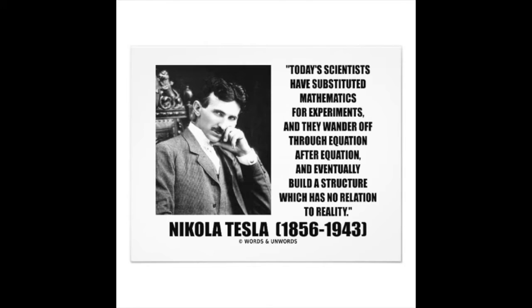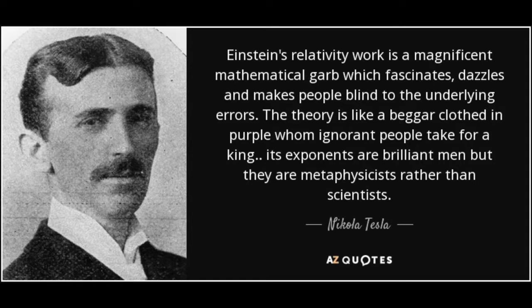Nikola Tesla is the true genius. He says Einstein's relativity work is a magnificent mathematical garb which fascinates, dazzles, and makes people blind to the underlying errors. The theory is like a beggar clothed in purple, whom ignorant people take for a king. Its exponents are brilliant men, but they are metaphysicists rather than scientists.